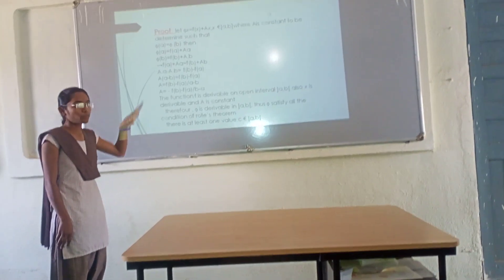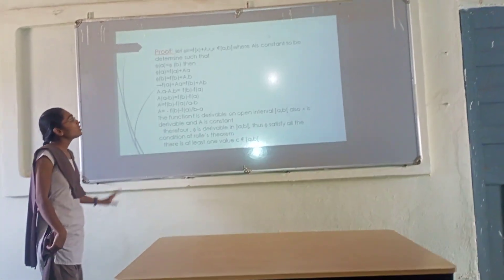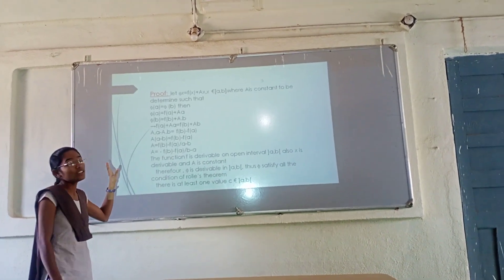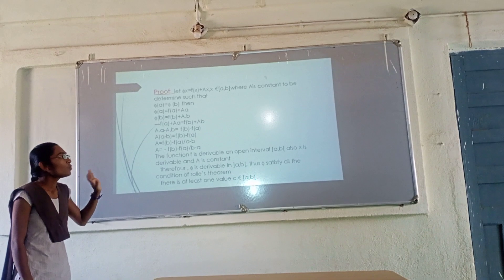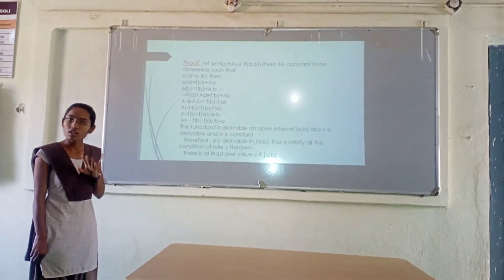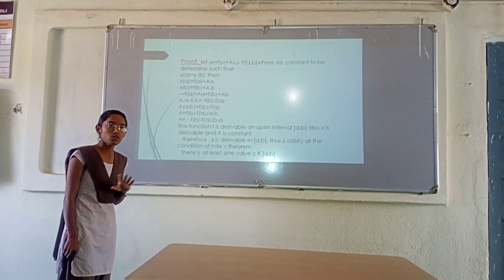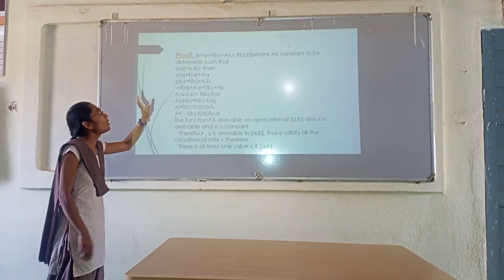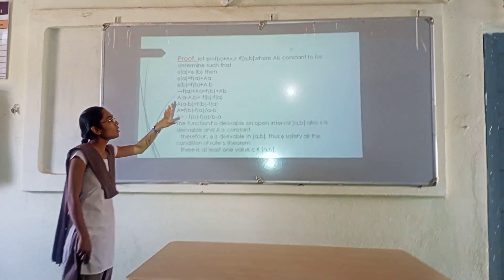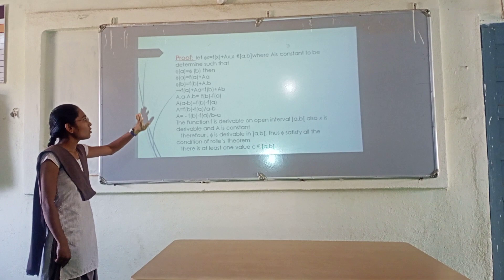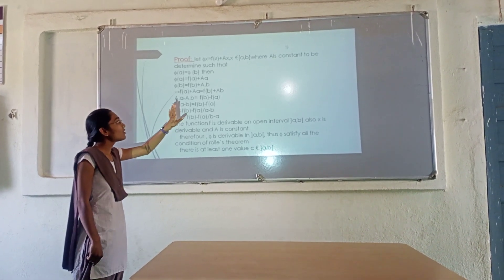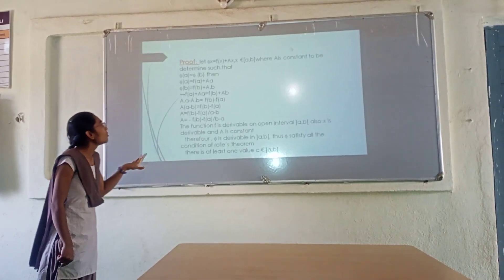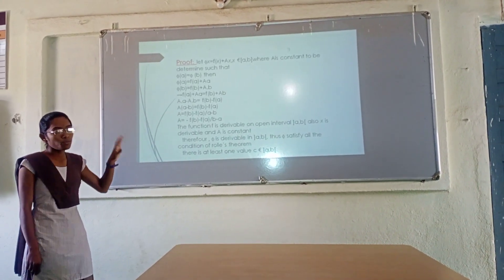Now let us come to the proof of Lagrange's Mean Value Theorem. To prove the theorem, we take a new function phi, which involves the function and also satisfies the conditions of Rolle's theorem. Let phi(x) = f(x) + A·x, where x belongs to the open interval (a, b), and A is a constant to be determined such that phi(a) = phi(b).